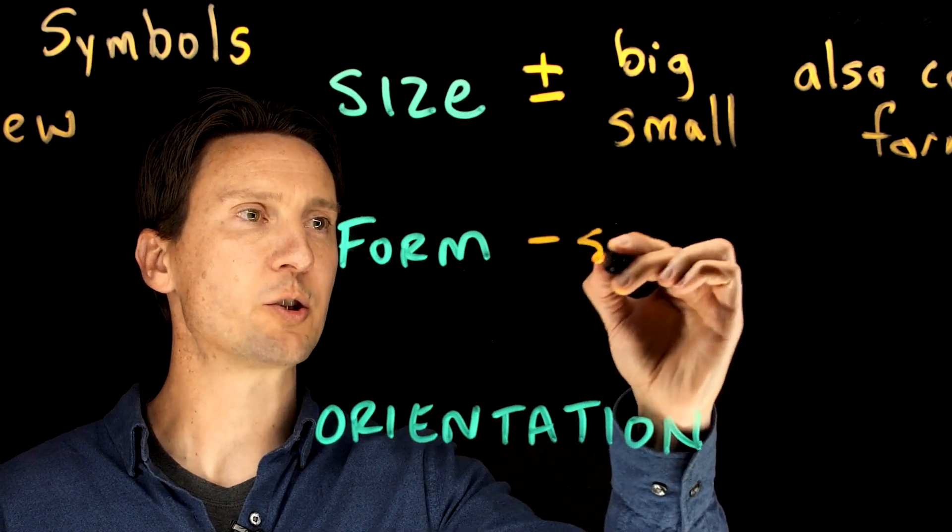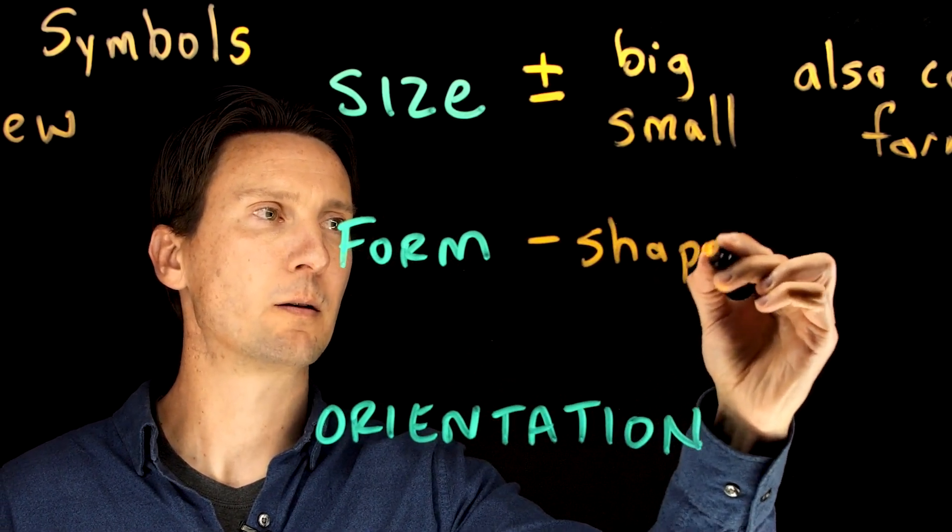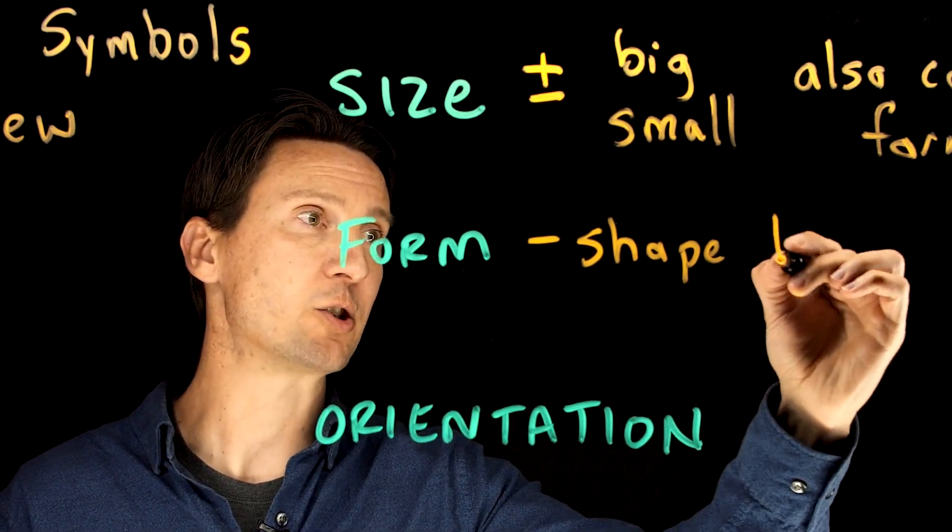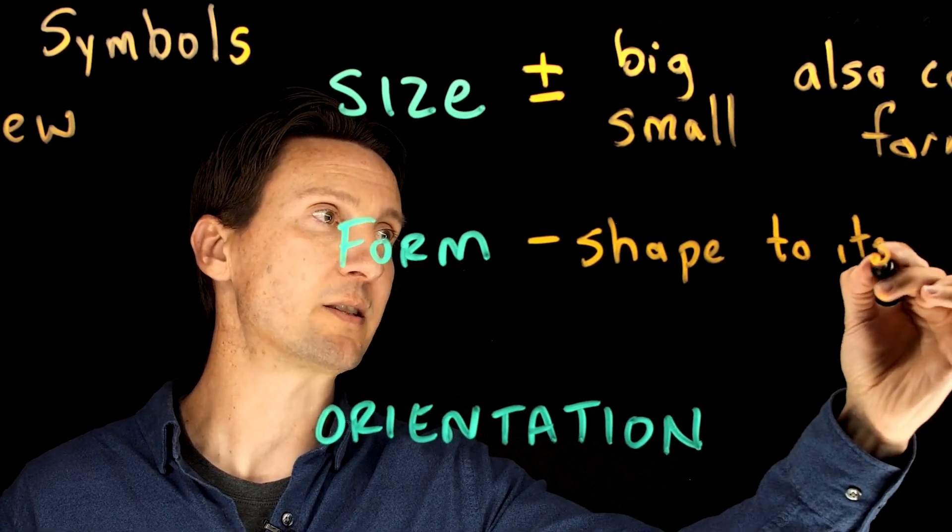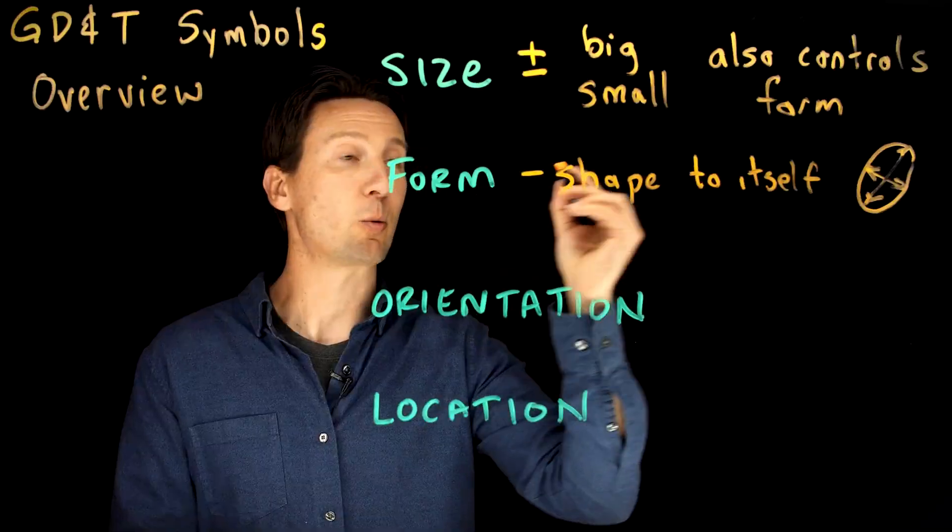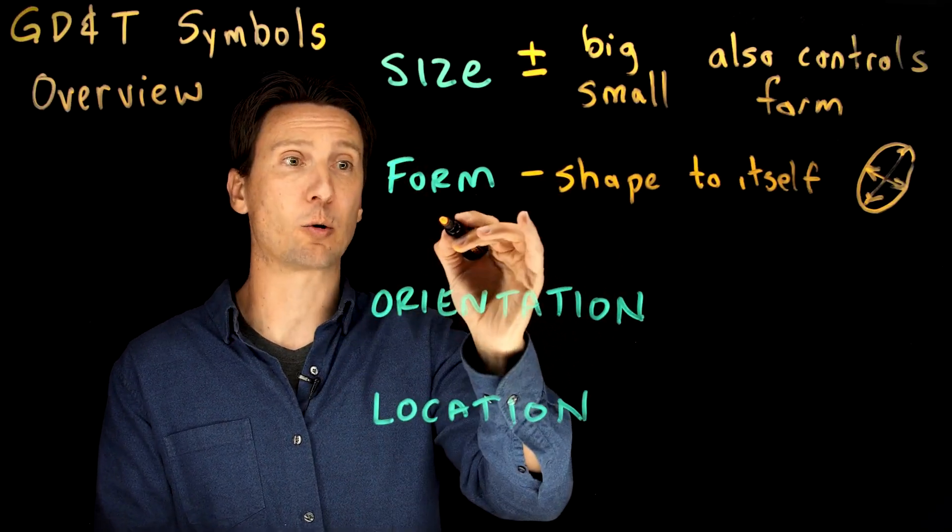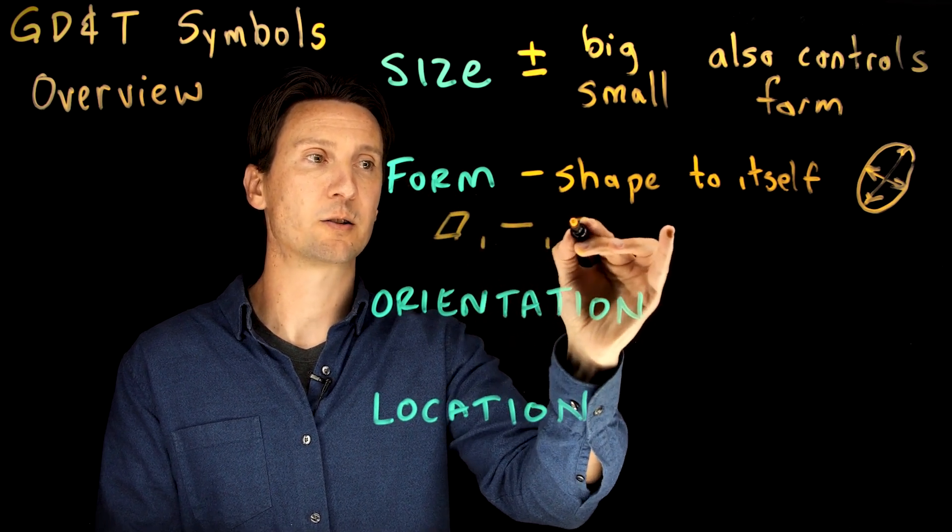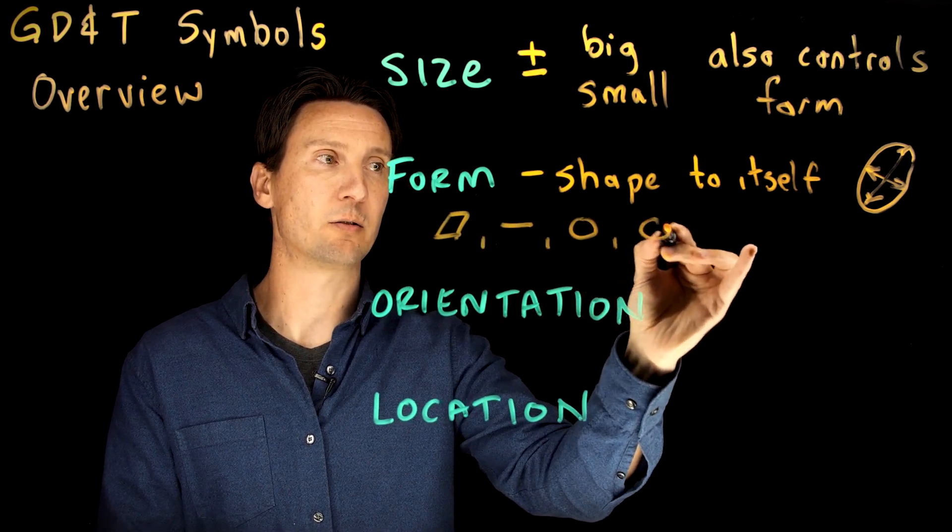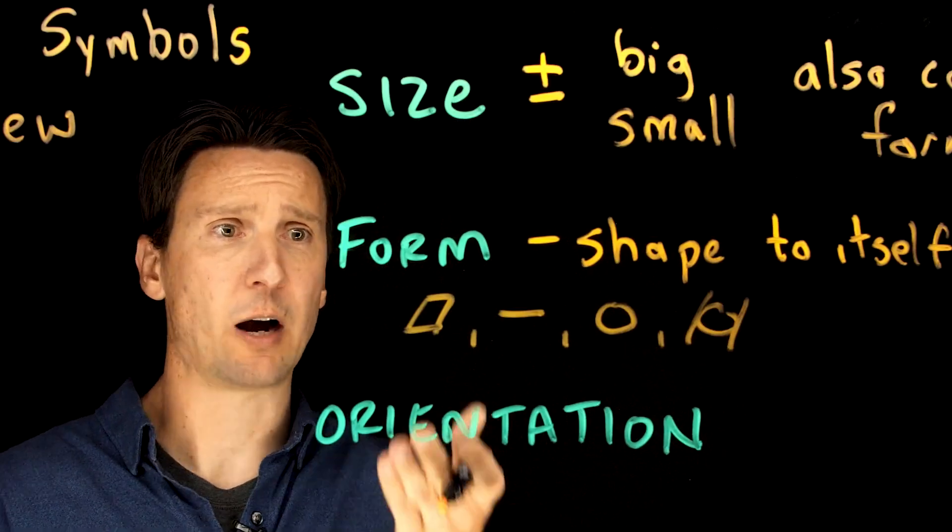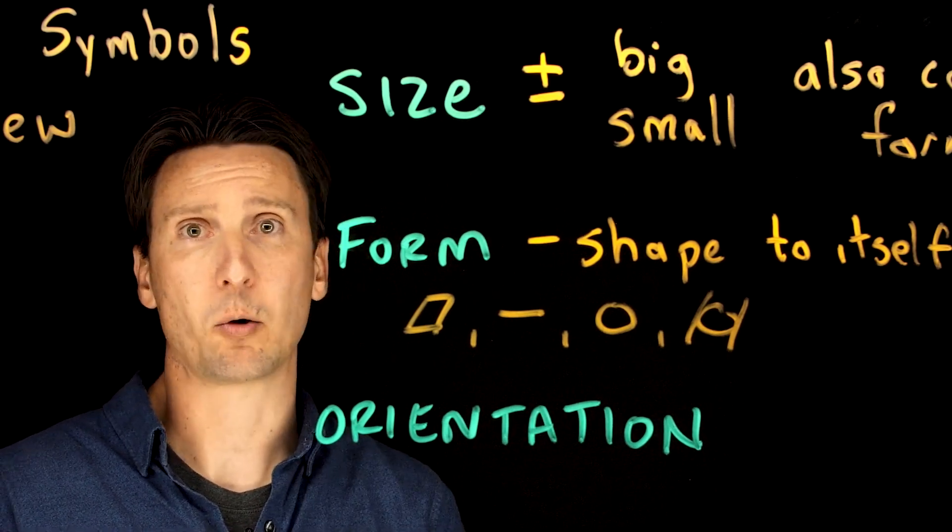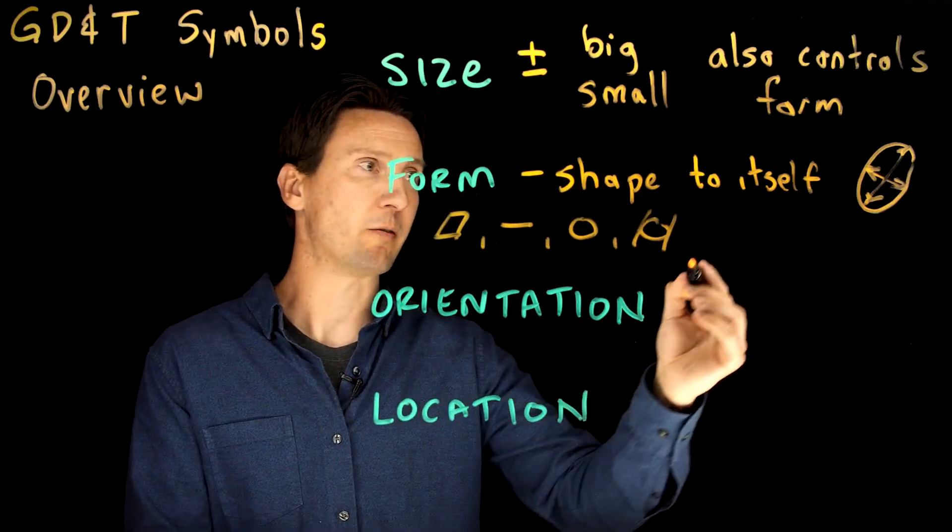And that is what form is. Form is just controlling the shape of something. When you say the shape of something, it's not relative to anything else, it's just relative to itself. We have four symbols that actually control form: flatness, straightness, circularity, and cylindricity. They're all shapes. How flat is that surface? How straight is that edge? How circular is that bearing? How cylindrical is that hole? They're all just shapes to itself.